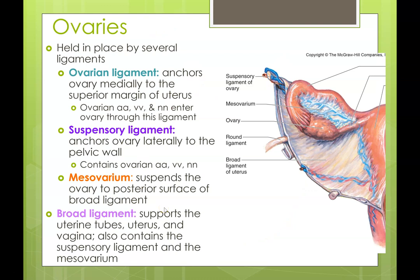Now let's discuss the ligaments. First we have the ovarian ligament, which anchors the ovary medially to the superior margin of the uterus. We also have the suspensory ligament, which anchors the ovary laterally to the pelvic wall. This contains the ovarian artery, ovarian veins, and also nerves.